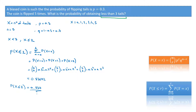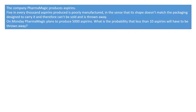The following example highlights just that. We're told that the company PharmaMagic produces aspirins, and 5 in every 1000 aspirins produced is poorly manufactured — its shape doesn't match the packaging and cannot be sold, so it is thrown away. On Monday, PharmaMagic plans to produce 5000 aspirins. What is the probability that less than 10 aspirins will have to be thrown away? We're definitely dealing with a binomial distribution. We define X as the number of faulty aspirins — those that have to be thrown away.